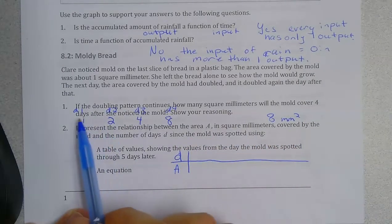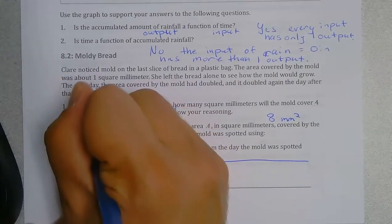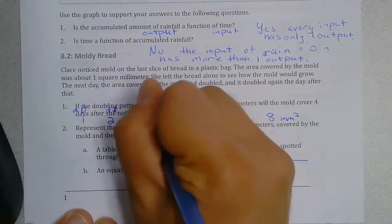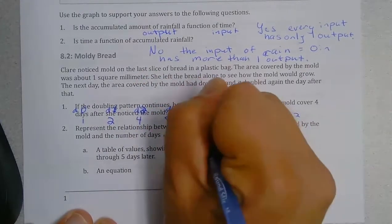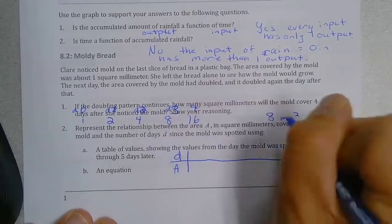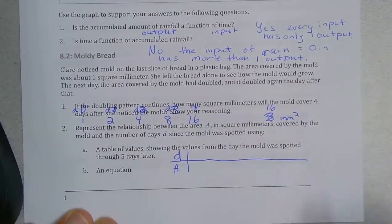Oh and I actually am wrong up here because day zero was one. This would be day one, two, three, and four. So this would be 16. My mistake.